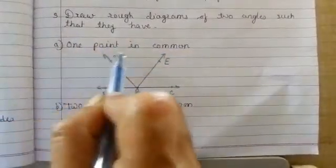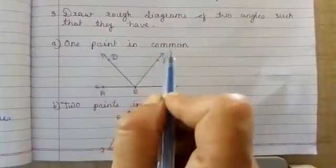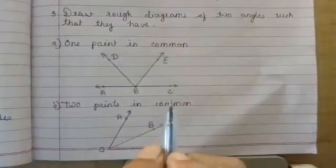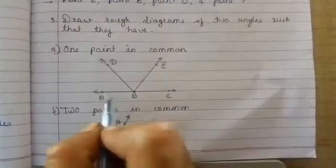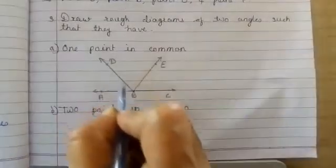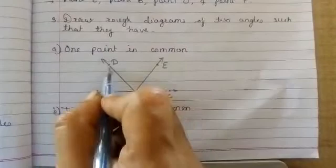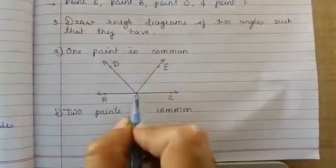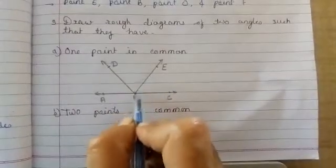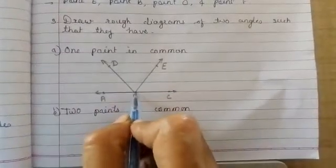First one is one point in common. We have to draw two angles, both having one point in common. Here this is a figure and these are two angles: angle ABD and angle CBE. Both these angles have point B in common.